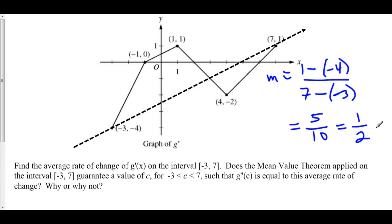Does the mean value theorem guarantee a value of c such that g double prime equals 1 half? The answer is no. In order to invoke the mean value theorem, the function must be differentiable on the interior from negative 3 to 7. However, there are three points — at negative 1, at 1, and at 4 — where g prime is not differentiable. Because the interior is not differentiable at those points, we cannot invoke the mean value theorem.